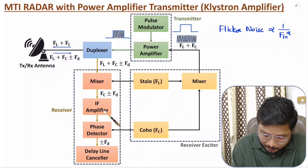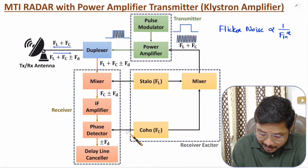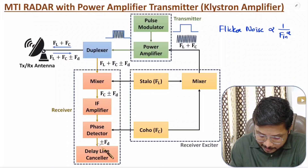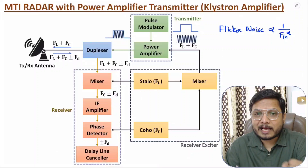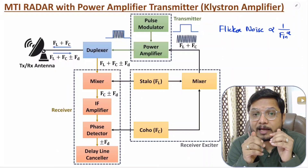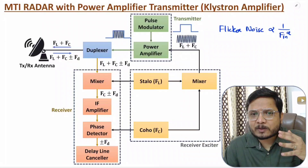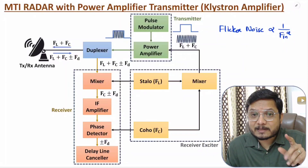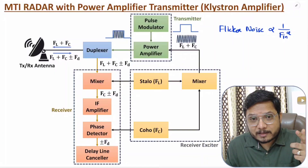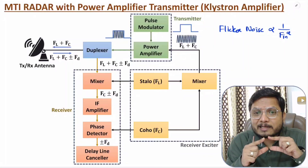Since FC is the intermediate frequency, we use an IF amplifier, after which the signal FC plus or minus FD is given to the phase detector. The second input to the phase detector is FC, which is eliminated, leaving an output of plus or minus FD. That signal is then given to the delay line canceller, which is used to identify echoes from moving objects only.